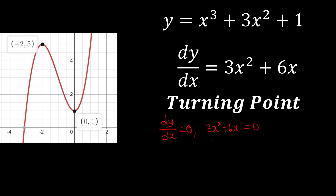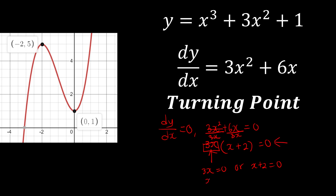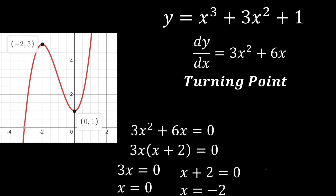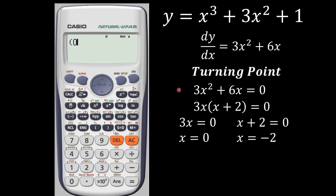To find the x values, we factorize: 3x is taken out as the highest common factor, giving 3x(x + 2) = 0. So either 3x = 0 or x + 2 = 0, because if either expression equals zero the product is zero. Therefore x = 0 or x = −2. Those two are our turning points.